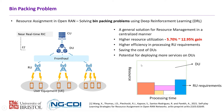For the bin packing problem formulation, we have the bin which is the DU. The horizontal axis is the processing time and the vertical axis is the actual physical resource. For each item, each item represents one RU requirement — the horizontal axis is the required processing time and the vertical axis is the physical resource requested by the RU.